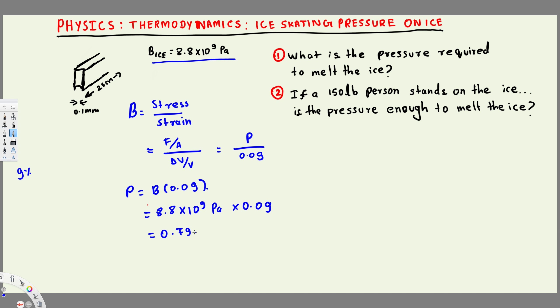That gives us 0.792 times 10 to the power of 9 Pascal, or you can write Newton per meter squared — both are the same thing.